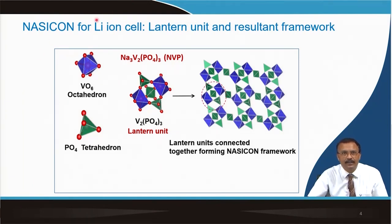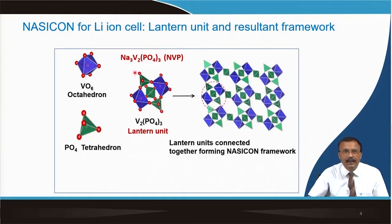Look at the structure of this NASICON-type material being used for a lithium-ion cell. You can see the VO6 octahedral configuration — vanadium stays in an octahedral arrangement. Phosphorus in PO4 stays in a tetrahedral configuration, shown as small green units.